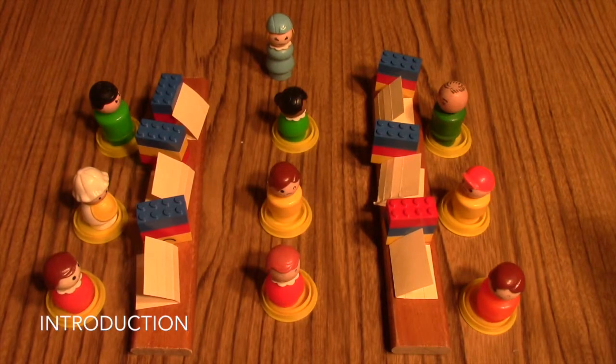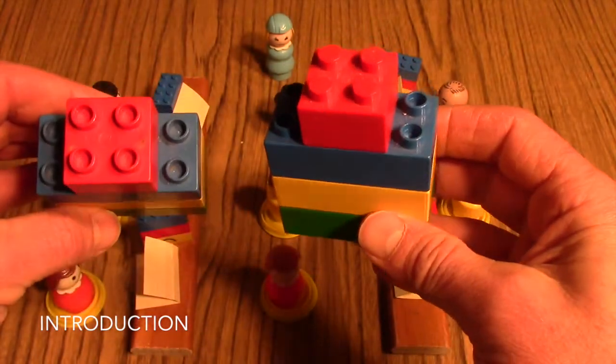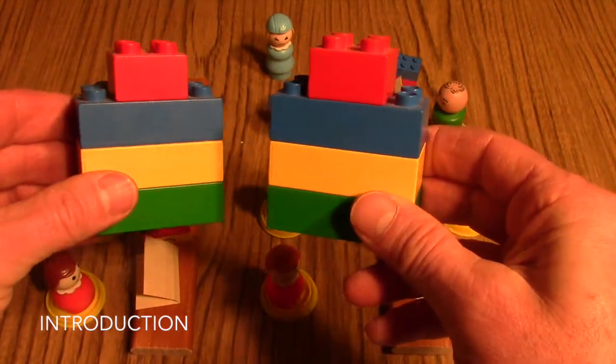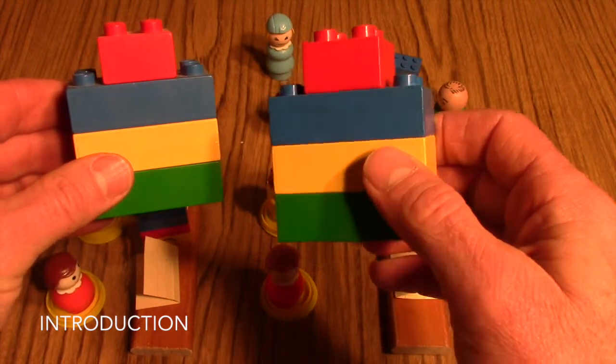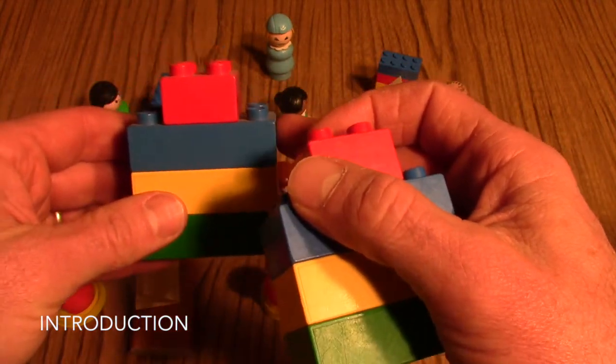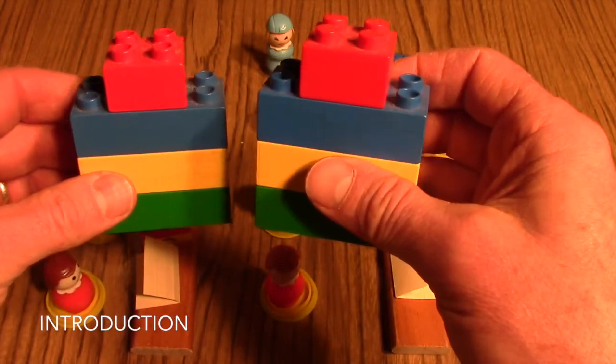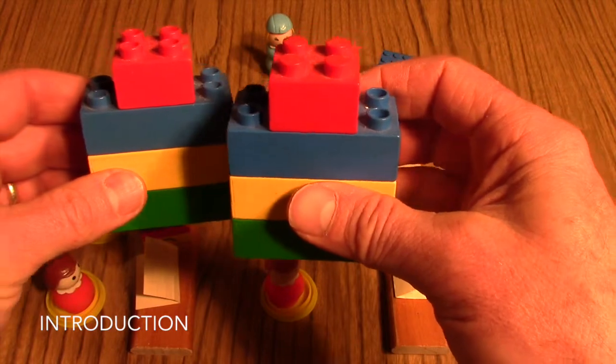The equipment you'll need for this game includes sets of identical Duplos for each team. Each team will need two identical sets. For our example here, we've got a green block, a yellow block, a blue, and a small red. Two sets are needed for each team.